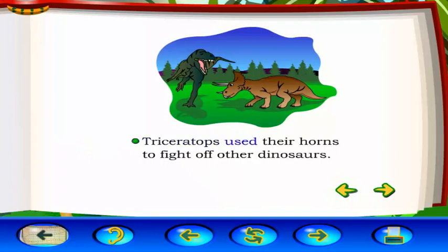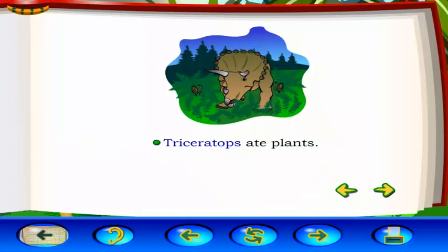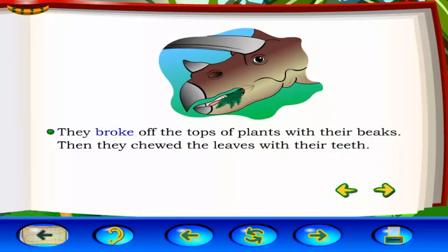A Triceratops used their horns to fight off other dinosaurs. They broke off the tops of plants with their beaks. Then they chewed the leaves with their teeth.